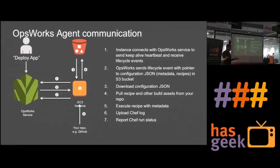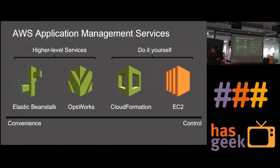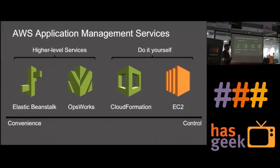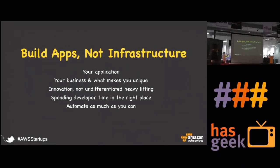To summarize the three services: there is a trade-off between convenience and control. In Beanstalk, maximum convenience — you just upload the code and forget. In OpsWorks, there is a bit of work but it abstracts a lot of services. In CloudFormation, you start from bare minimum and build from there. On raw EC2, you can do whatever you want. The whole nature of Amazon Web Services is to focus on your core application and let the entire undifferentiated heavy lifting come through the services.